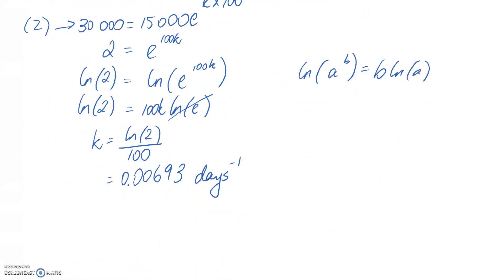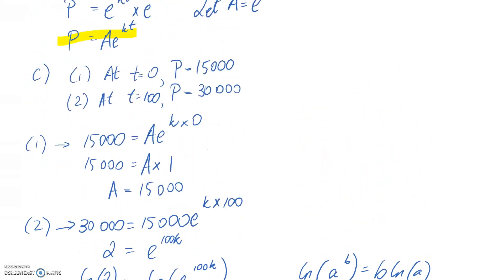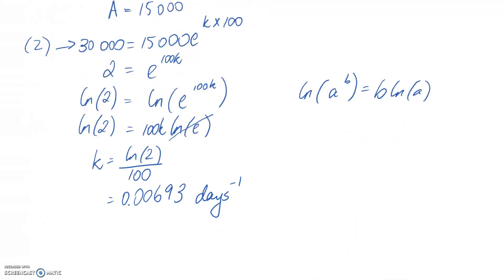Now we write the equation describing population over time by substituting the values we found. P = 15,000·e^(0.00693t). This is the final answer for the specific solution.